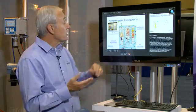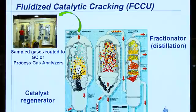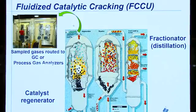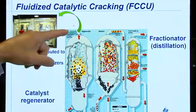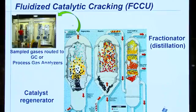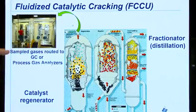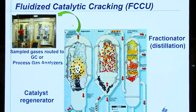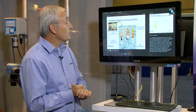So in this process we use an extractive type of system where we draw a sample off, remove the water vapor, remove the particulate, and then place it into analyzers that are usually placed in cabinets or sometimes even a house at the base of the process unit.